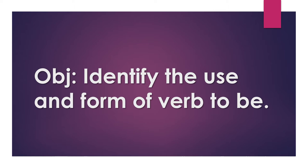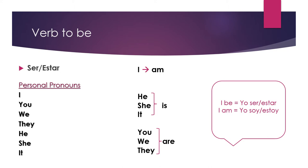Verb to be in Spanish means ser and estar, and to use it we're going to use the personal pronouns: I, you, we, they, he, she, it. The verb to be is going to change its spelling according to the pronoun that we use in the sentence.